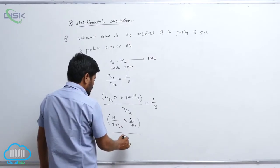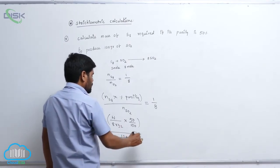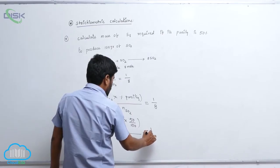Then this is 1, this is 2, this equals to 1 by 8.